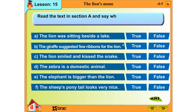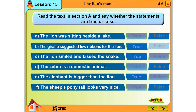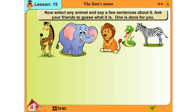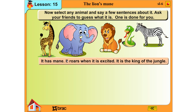Read the text in section A and say whether the statements are true or false. Now select any animal and say a few sentences about it — ask your friends to guess what it is. One is done for you: It has a mane. It roars when it is excited. It is the king of the jungle.